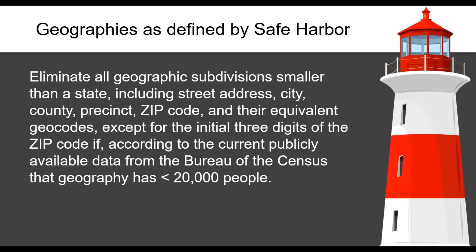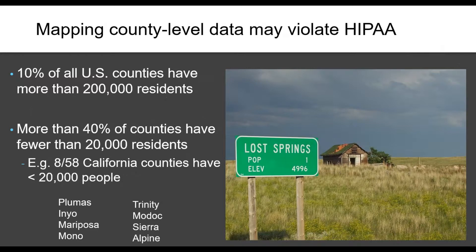Under Safe Harbor, expressing data at a state level is acceptable. If you go smaller than a state, you have two options: use three-digit zip codes, or any geography that has more than 20,000 people. Consider that in the United States, more than 40% of counties have fewer than 20,000 residents — in those cases, you could violate HIPAA by sharing county-level data. In California, for instance, 8 of 58 counties have small populations. That doesn't necessarily mean every county-level map breaks the privacy rule, because we have a second de-identification method.